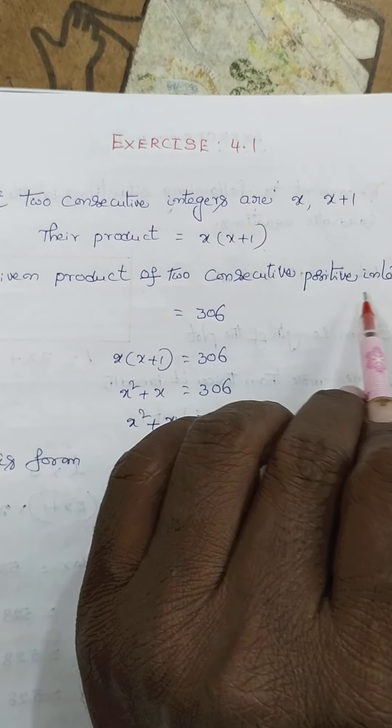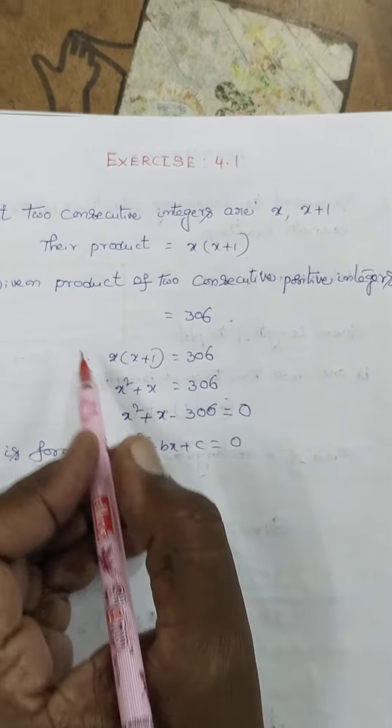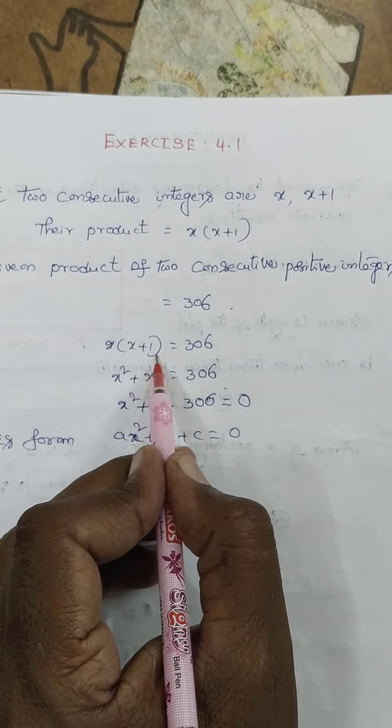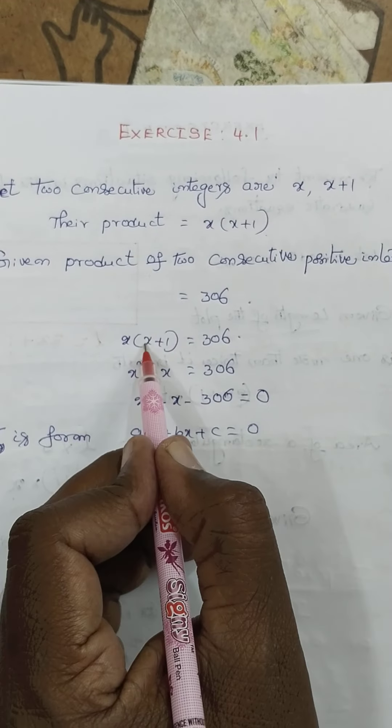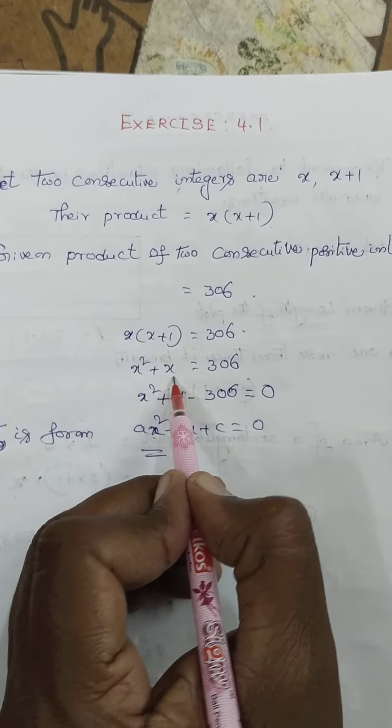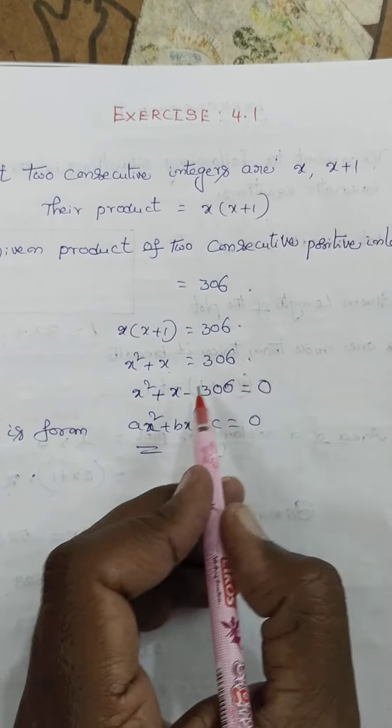Given that the product of two consecutive integers is equal to 306, we can write: product x into x plus 1 is equal to 306. Expanding: x into x is x square, x into 1 plus x is equal to 306. Taking the right side to the left, it becomes minus 306 equals zero.